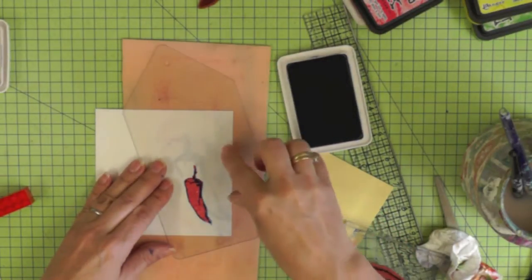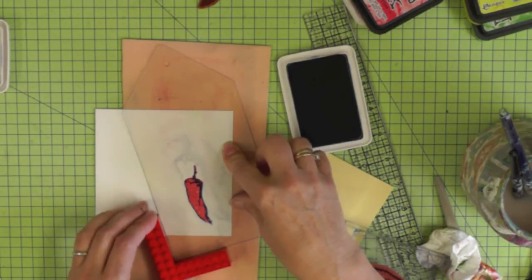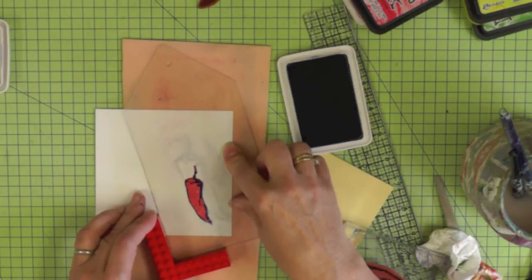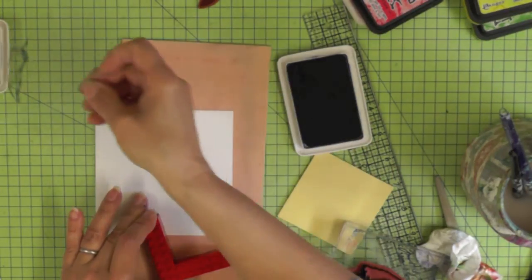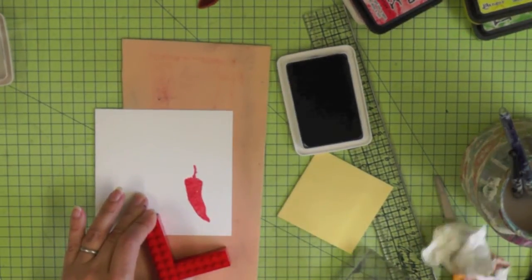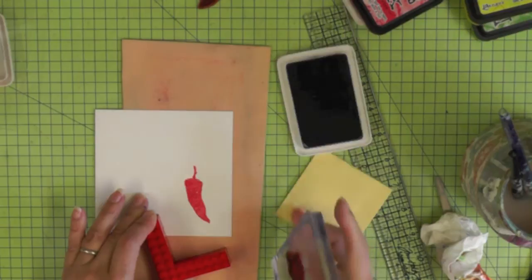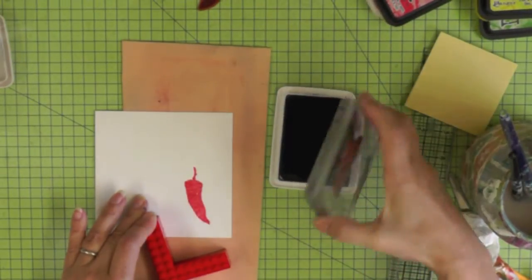I'm going to put my tag so that the image is over my red chili and when I'm happy with the positioning I'm going to hold that little piece of Lego against the piece of acrylic and I can remove the acrylic and then I'm ready to stamp with my chili stamp. You do need to be a little bit dexterous in order to do this as you can see.